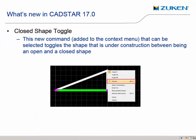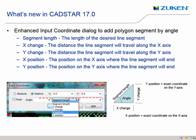Have you ever started drawing a shape and after a few clicks realized that you're drawing a closed shape and had to throw it all away to change it back to open? Now you can simply right-click and toggle the setting instead of stopping, changing the settings, and starting again. When drawing shapes, users have recently had the ability to right-click and enter coordinates. This now includes the angle and line length, making the drawing of triangles and chamfered corners easier and more accurate.